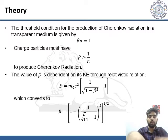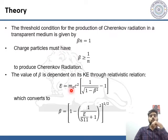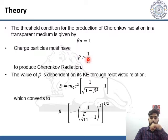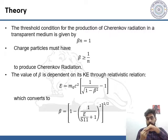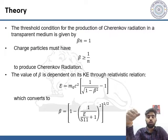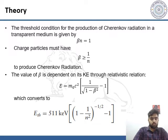Here you can see the relativistic relation, where m₀c² is the rest mass energy of the electron and beta is the relative phase velocity of the particle and n is the refractive index. When we substitute the rest mass energy of the electron, we get an expression for beta. The minimum threshold value required for a beta particle or electron to emit Cherenkov radiation is given by this expression.